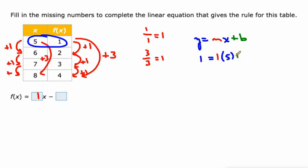And we're going to be able to figure out b from this. So we will just multiply 1 times 5 is 5. And then we'll subtract 5 from both sides. And we get negative 4 is equal to b. So negative 4. IXL already put the negative sign in there for us. f of x equals 1x minus 4.